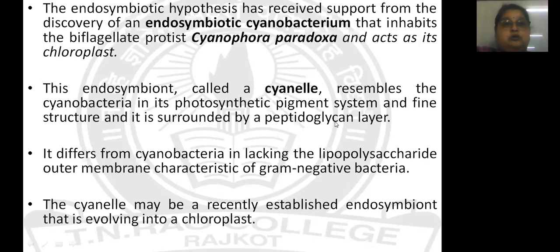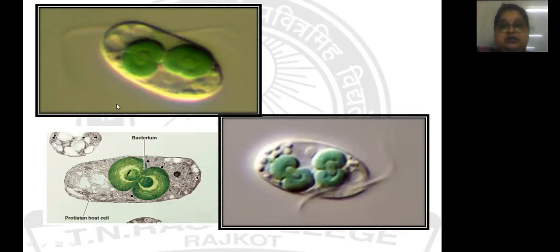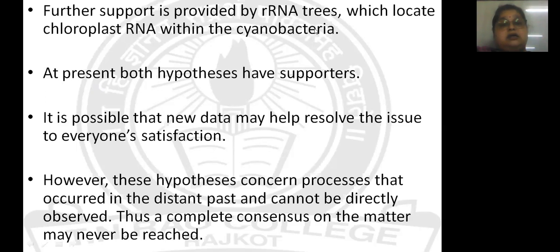The cyanella has almost all features of a bacterium. It differs from cyanobacteria in lacking the polysaccharide lipopolysaccharide outer membrane, which is a general characteristic of gram-negative bacteria — likely lost due to the endosymbiotic relationship. The cyanella may be a recently established endosymbiont evolving into a chloroplast. Further support is also provided by the study of rRNA, which shows that chloroplast and mitochondrial rRNA share similarity in structure and sequence with bacterial rRNA. Both hypotheses have support but neither alone explains the full evolution.